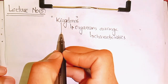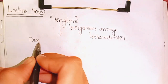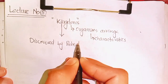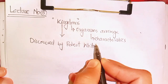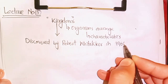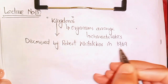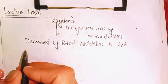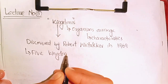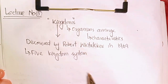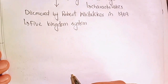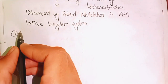Let's see how the Five Kingdoms System was discovered — discovered by Robert Whittaker. Robert Whittaker, in 1969, discovered the Five Kingdom System. This is an easy and very important concept: The Five Kingdom System.